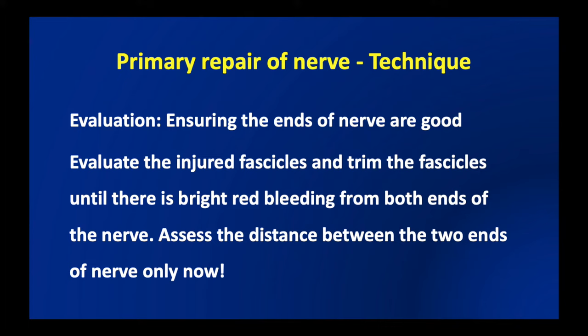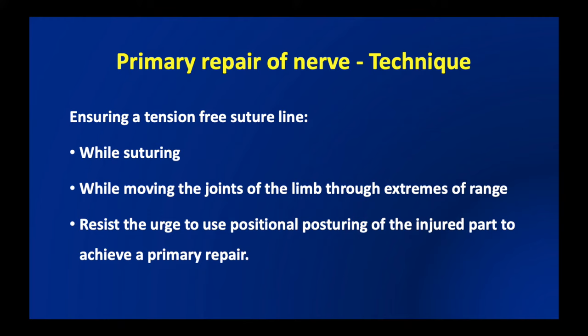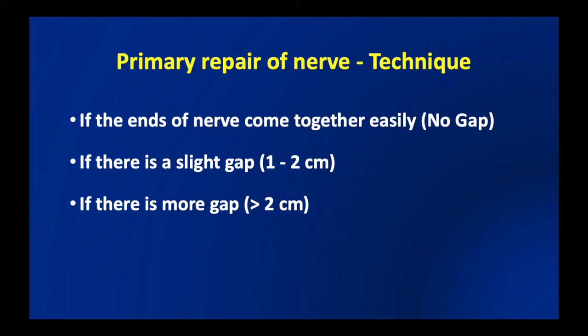We then assess the distance between the two nerve ends. We must ensure a tension-free suture line after repair — tension-free while suturing and while moving the joints through the extremes of range of motion. We need to resist the urge to use positional posturing of the injured part to achieve primary repair; keeping the wrist in acute flexion just to achieve primary repair should be avoided. At this juncture we are likely to encounter three situations: the ends come together easily with no gap, a slight gap of about one to two centimeters, or a much bigger gap of more than two centimeters.